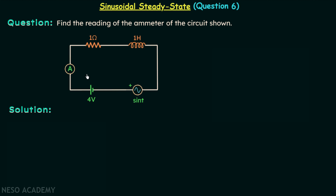When you observe the given circuit, you will find we have two sources. The first source is the DC source and the second source is the AC source. According to the question, we need to find out the reading of this ammeter. Ammeters read current, so we will find out this current in this circuit. We will first find the current due to the DC source, then due to the AC source, and the net current will be the sum of the two currents.